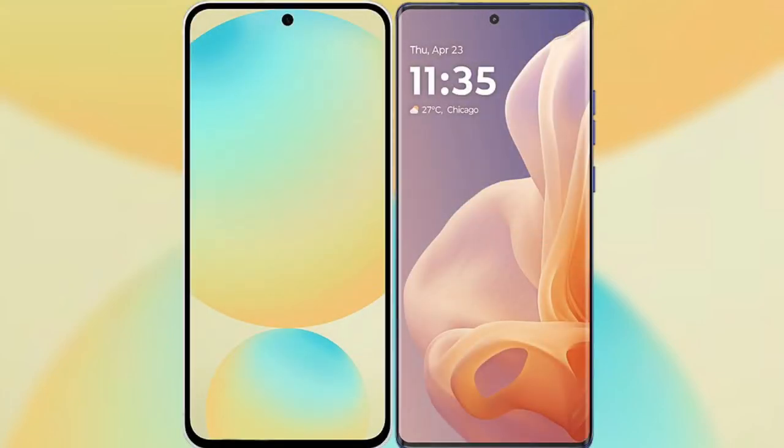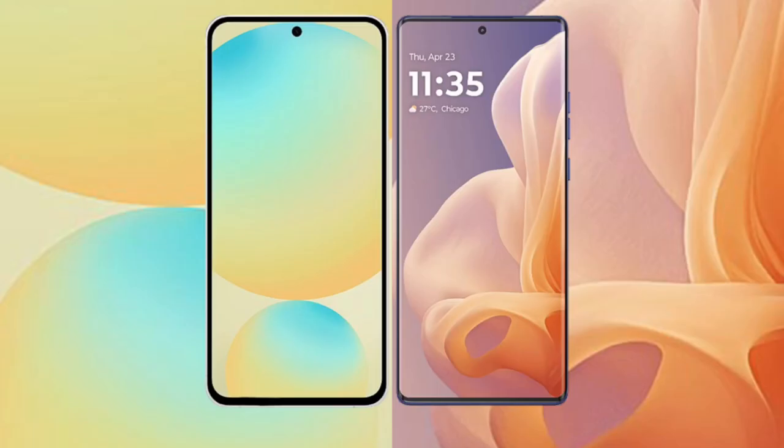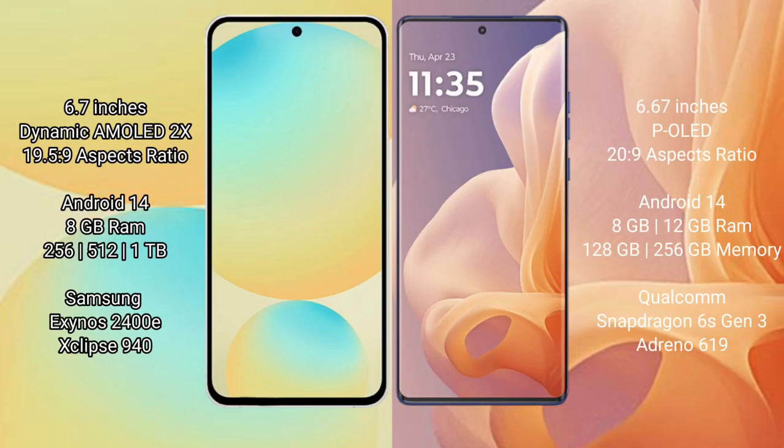Comparing the Samsung Galaxy S24 FE with the Motorola Moto G85. The Samsung Galaxy S24 FE features a 6.7-inch dynamic AMOLED display with an aspect ratio of 19.5:9. The Motorola Moto G85 features a 6.67-inch pOLED display with an aspect ratio of 20:9.